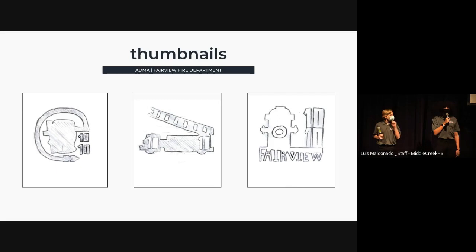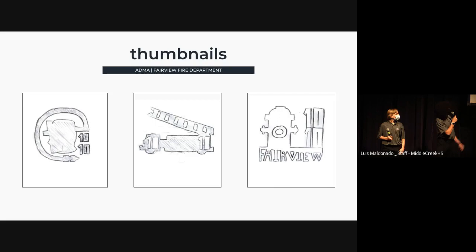For my second logo, I went with the silhouette of a fire truck with the doors and windows produced by negative space shaped as a 10-10. The ladder is raised on the truck in order to show that the department is always prepared and to make it more recognizable. For my third logo, I went with the line art style fire hydrant with the 10s stacked on top of each other, with the elements connected to the text 'Fairview' to incorporate the name of the location right there in the graphic.